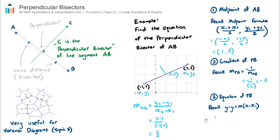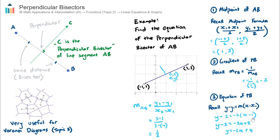Using point-slope form with the midpoint (1, 2) as our point — not the original A or B, since the perpendicular bisector passes through the midpoint — we get: y − 2 = −2(x − 1). Expanding the right-hand side: y − 2 = −2x + 2. Adding 2 to both sides gives y = −2x + 4 in slope-intercept form. This is the equation of the perpendicular bisector.